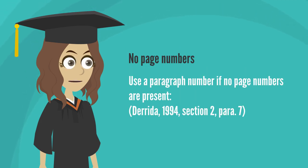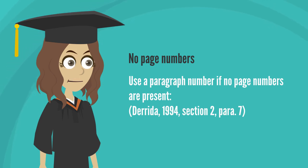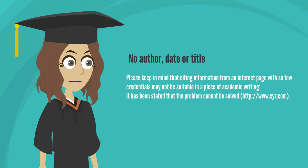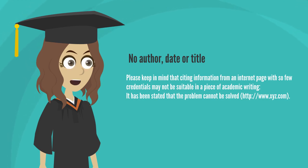For example: Derrida, 1994, Section 2, Para. 7. Please keep in mind that citing information from an internet page with so few credentials may not be suitable in a piece of academic writing.